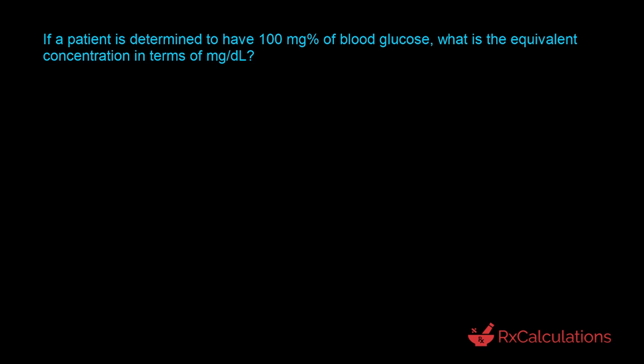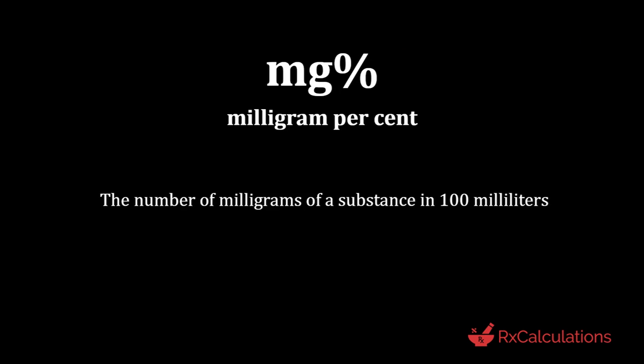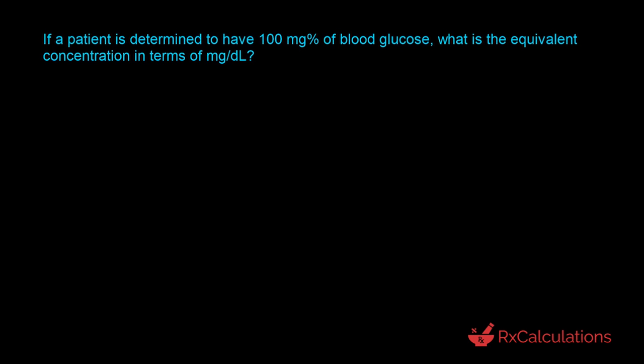One of the things you should be able to do is convert between milligram percent to milligram per deciliter, and also express these concentrations in different forms like a percentage concentration or a ratio strength. The question has 100 milligram percent, and what milligram percent means is the number of milligrams of a substance in 100 milliliters. That definition is important to recollect because it's needed to solve this question.